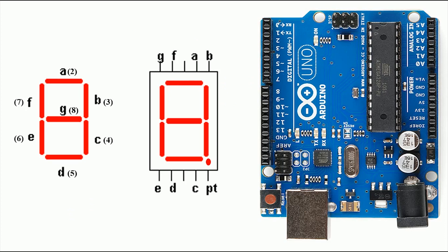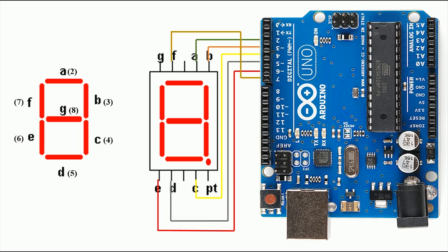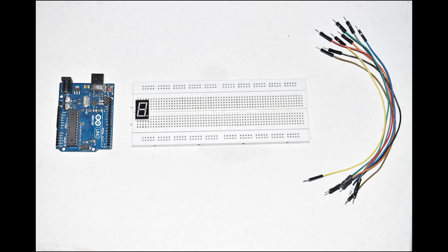Here is the connection diagram. We will ignore the dot in this tutorial and deal with 7 LEDs only for simplicity. We have given labels A, B, C, D, E, F, G to these LEDs. Connect LED A of the seven segment to pin 2 of Arduino, then connect LED B to pin 3 of Arduino, and in this way connect all LEDs to Arduino digital pins 2 to 8. Once all LEDs are connected, connect the common cathode pin to ground. The middle pins on the top and bottom of the seven segment are shorted, so connect any one of them to the ground of Arduino. Now I will follow the same procedure on hardware also.